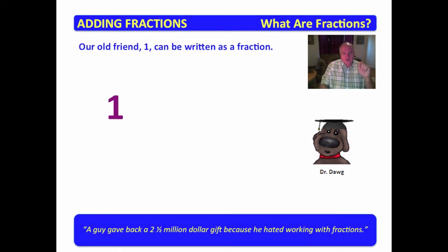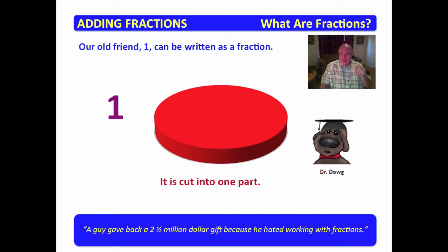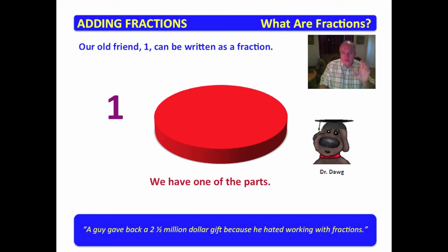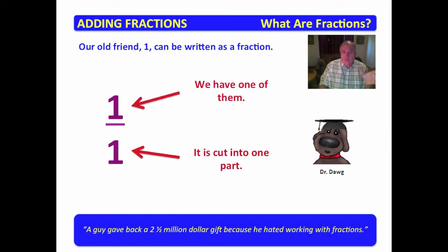Now let's go back and visit our old friend, one. It is a whole number which can also be written as a fraction. We have one whole unit. This whole unit is cut into how many parts? Well, it's not cut into parts — it's cut into one part. It hasn't been divided up, so it is one part. And how many of them do we have? We have one of them. So if we want to write this as a fraction, we can write it as one over one — it is cut into one part and we have one of them.